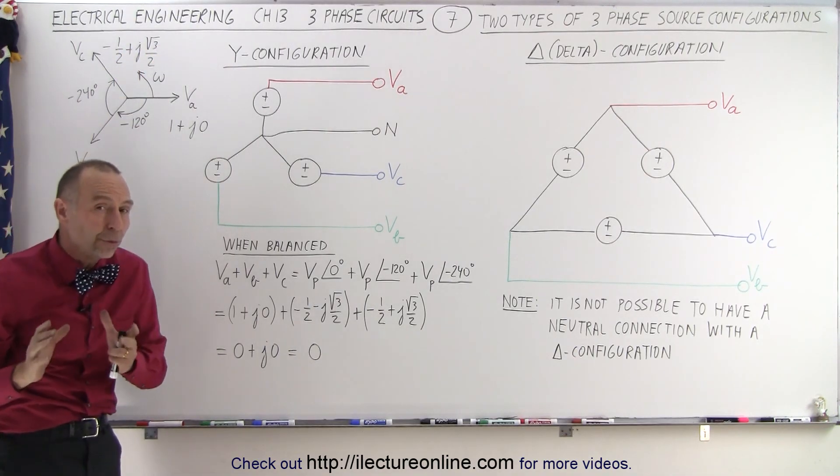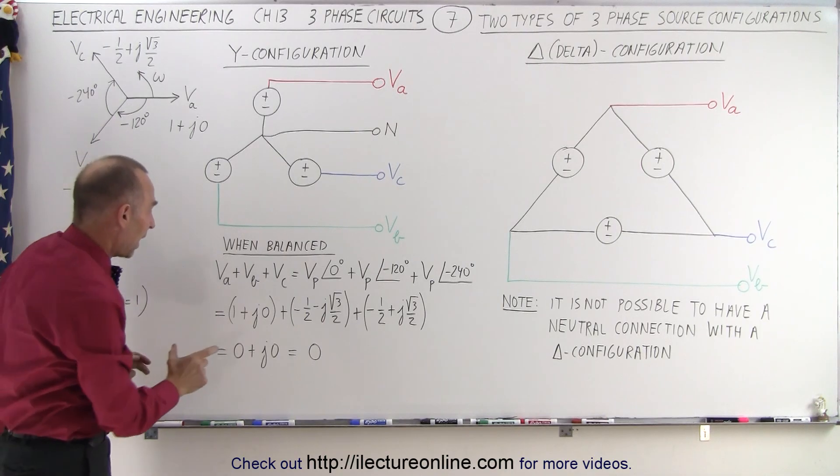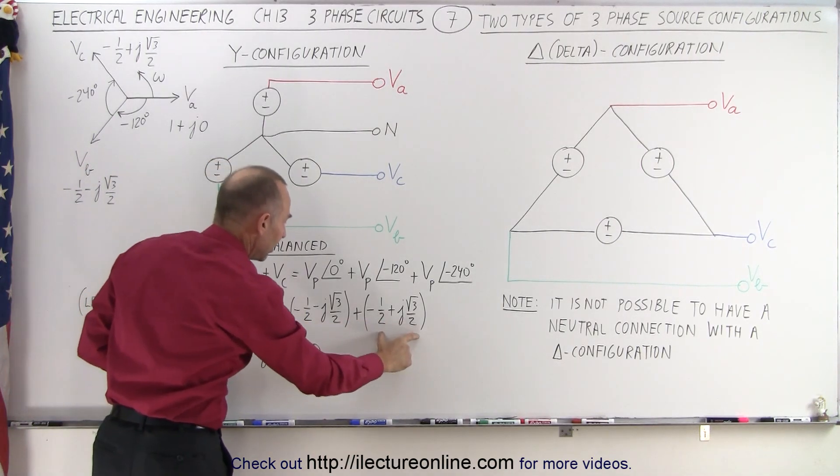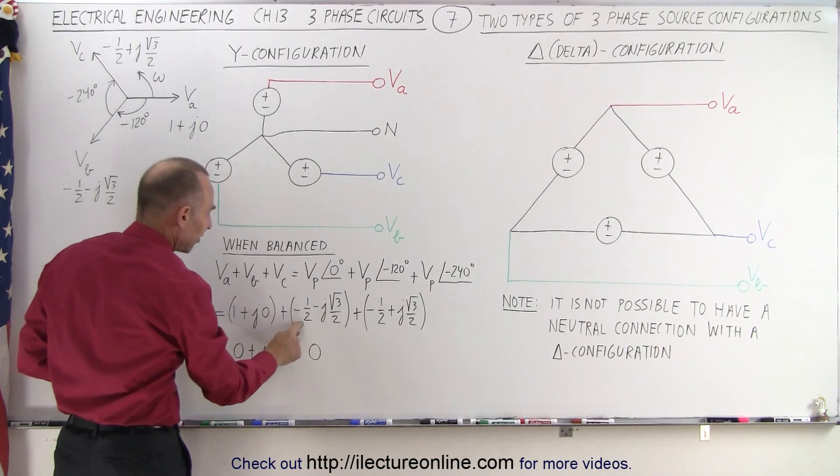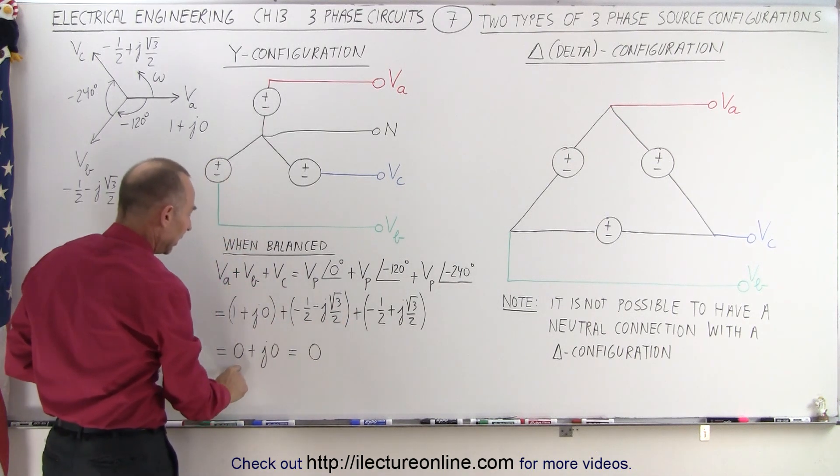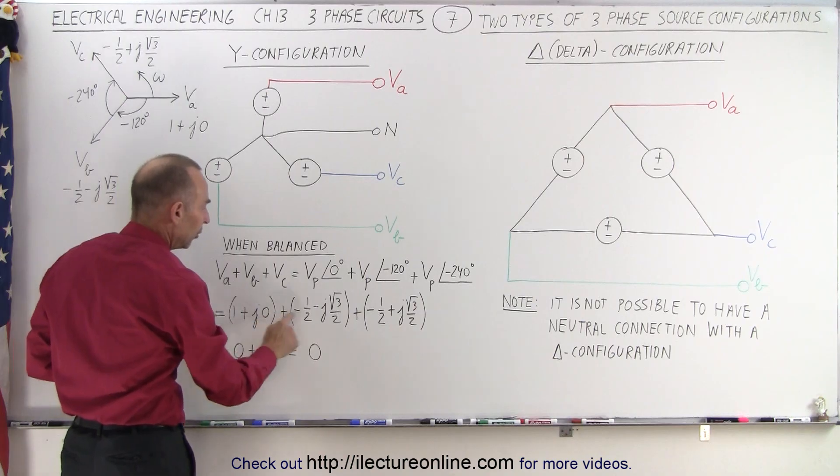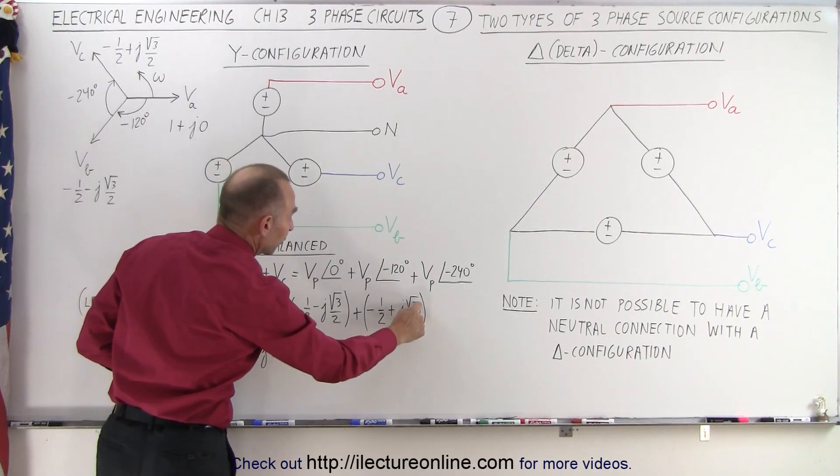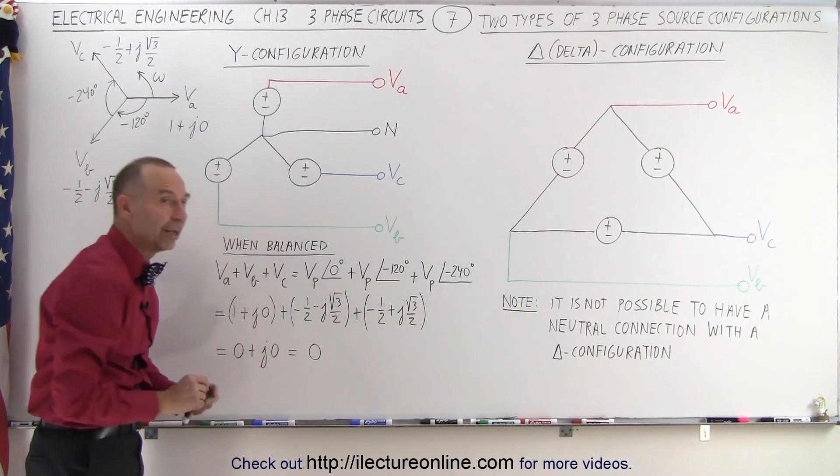If we now add all three voltages together, notice what happens. We have V-A plus V-B plus V-C. The real part, 1 minus half minus half is equal to 0, and the imaginary part, 0 minus the square root of 2 over 2, minus the square root of 3 over 2, and plus the square root of 3 over 2. When they add all together, you get 0 as well.